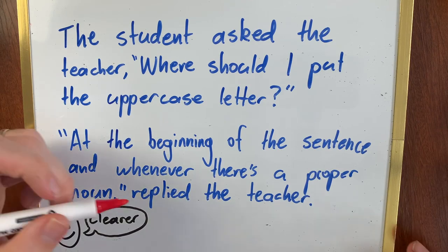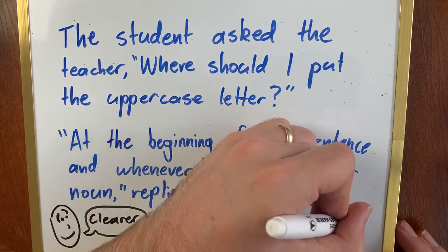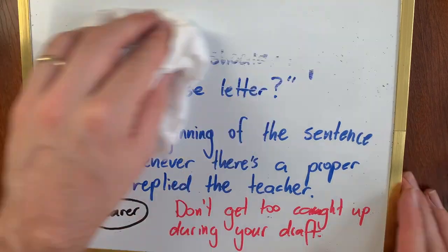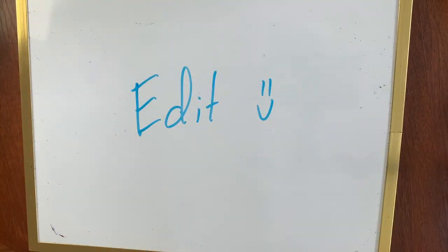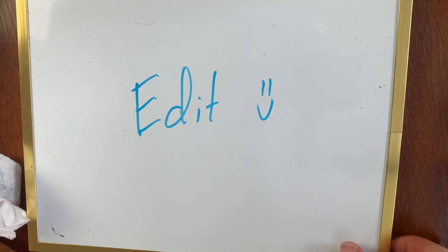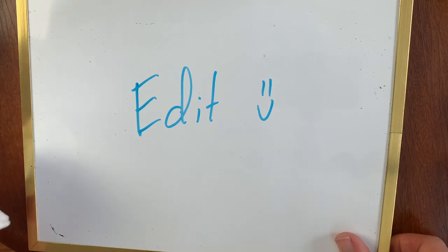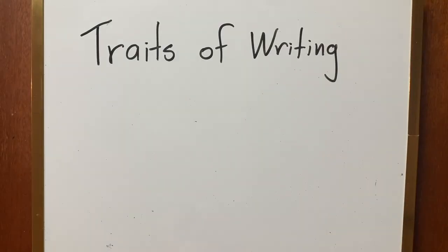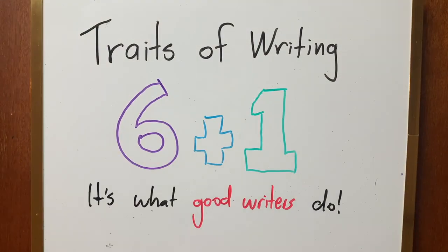Punctuation and spelling are important, but when you're writing your first draft, don't get caught up so that it slows you down. Remember, you can always come back to it during your editing to fix up any convention mistakes and add conventions that you need. Traits of writing six plus one is what good writers do.